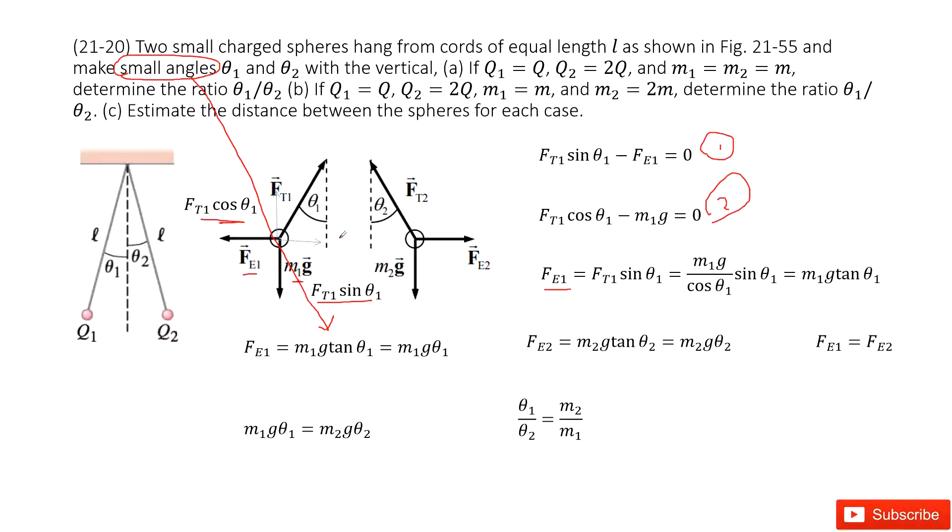And very similarly, you can see particle 1 and particle 2 are mirror symmetry. So similarly, you can get Fe2 as m2g θ2.